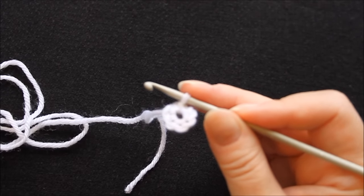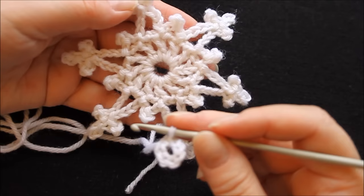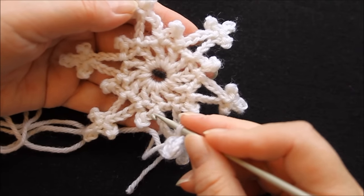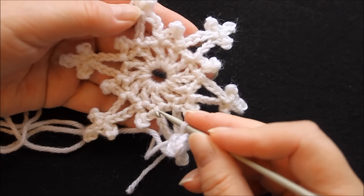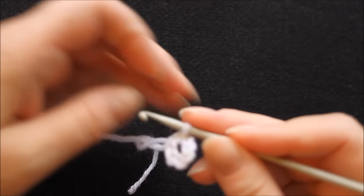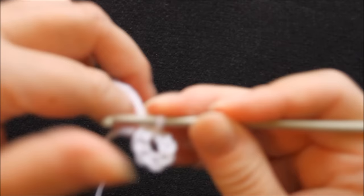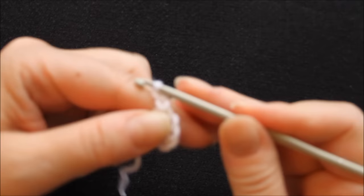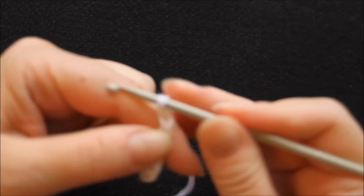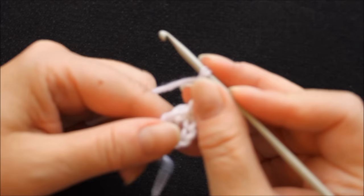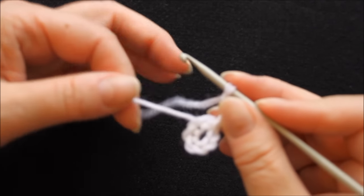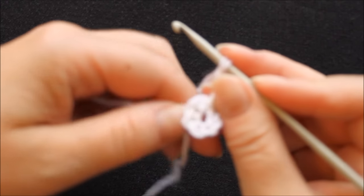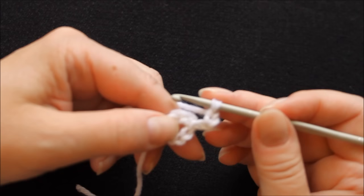Then I'll make a round of trebles with chain two in between, and that's trebles in the English sense, it's double crochet in American. First I chain four, and that forms also the first treble. Then I'm leaving the yarn end inside the crocheting so I don't need to weave it in separately.